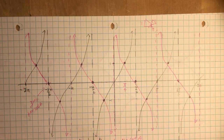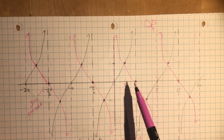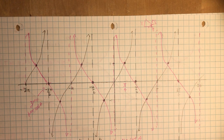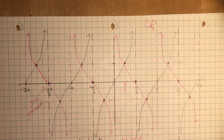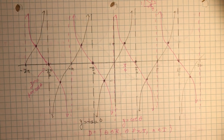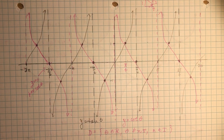For cotangent, the domain is: theta is an element of real numbers such that theta is not equal to n times π, where n is an element of integers — so zero, π, 2π. The range goes everywhere: y is an element of real numbers. That's all you really need to know for your reciprocal trigonometric functions. Don't forget to subscribe and support the channel!